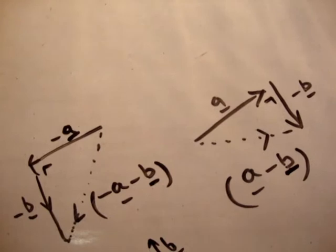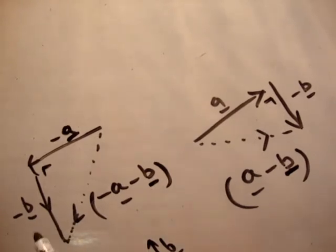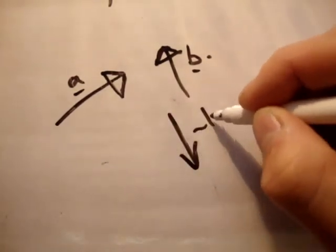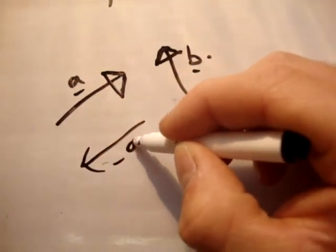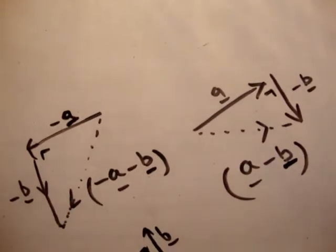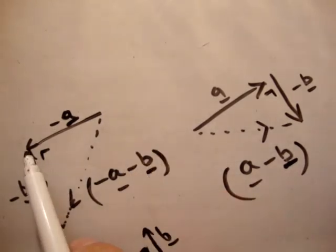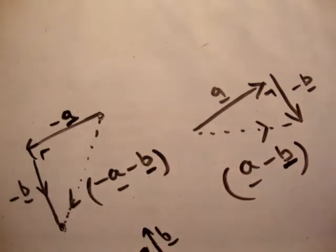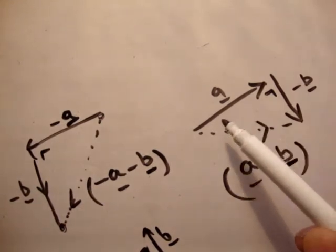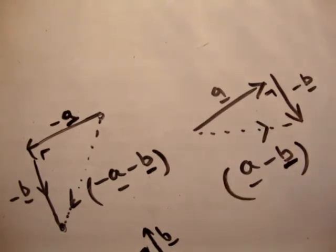Just a quick recap of other combinations we could have. For minus a minus b, you turn a around — there's minus a, and there's minus b. Draw your resultant from the tail of minus a to the head of minus b. And for a minus b, you go plus a and minus b, and draw your resultant vector.